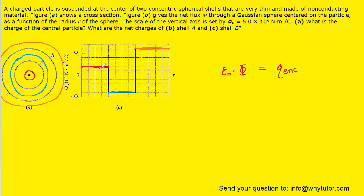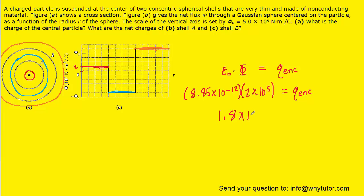All we have to do is plug in the electric flux read off the graph. According to the scale, the value is 2 times 10 to the 5th for the electric flux. We have omitted units for clarity. The constant epsilon is 8.85 times 10 to the minus 12. Multiplying these out, we get roughly 1.8 times 10 to the minus 6 Coulombs for the charge enclosed — and since our Gaussian surface only encloses the central particle, this is the charge of that particle. This is the correct answer to Part A.